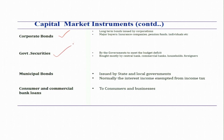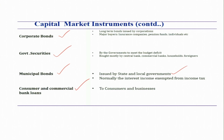Government securities are issued by governments to meet their budget deficits and are mostly bought by central banks, commercial banks, households, and foreigners. The default risk of government securities is very low, which is one reason commercial banks and households prefer them. Municipal bonds are issued by state and local governments, and the interest income from municipal bonds is normally exempted from income tax. Consumer and commercial bank loans are long-term loans given to consumers and businesses.